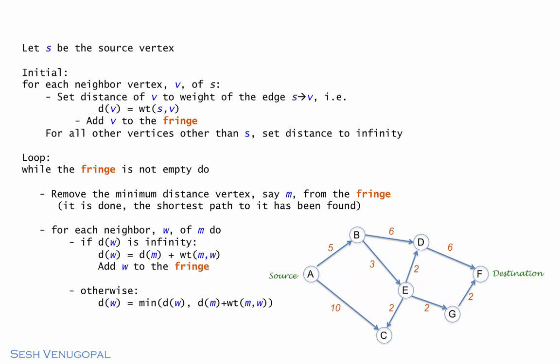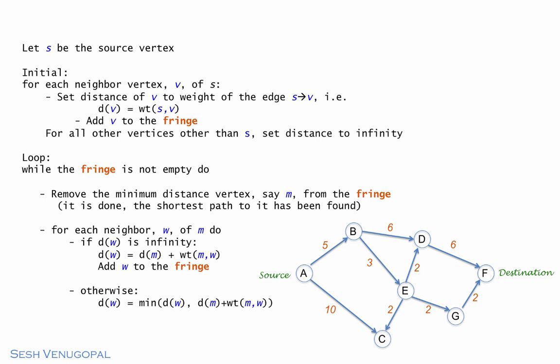Okay, to wrap it all up, here's the algorithm. S is the source vertex. In our example, that would be A. In the initial step, for each neighbor of the source, we'll set its distance to the weight of the edge from the source to it. So, B's distance would be 5, C's would be 10. For all the other vertices that are not reachable from A yet, the distances will be set to infinity. And then we start up the loop and keep spinning it until the fringe becomes empty.